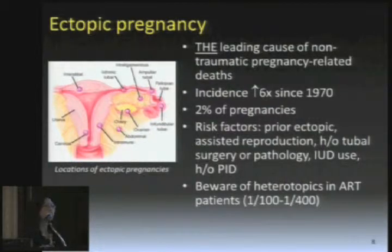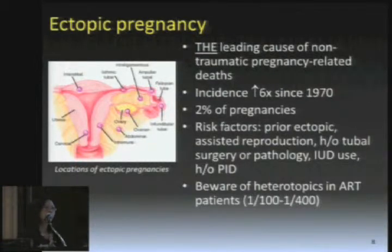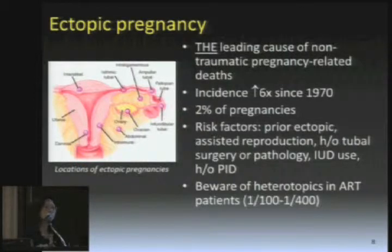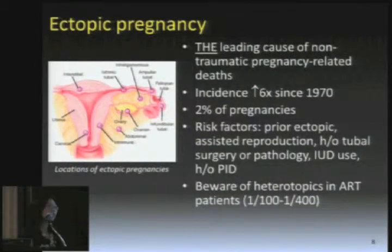Clomid alone actually quadruples your risk of ectopics. And then heterotopics — the presence of having an intrauterine pregnancy plus an ectopic pregnancy — it's pretty rare. At baseline it's only 1 in 20,000. However, you should be aware that heterotopics are really much more common in patients getting assisted reproductive technology. It's been quoted in the literature as 1 in 100 or 1 in 400. So definitely think about that in those patients.